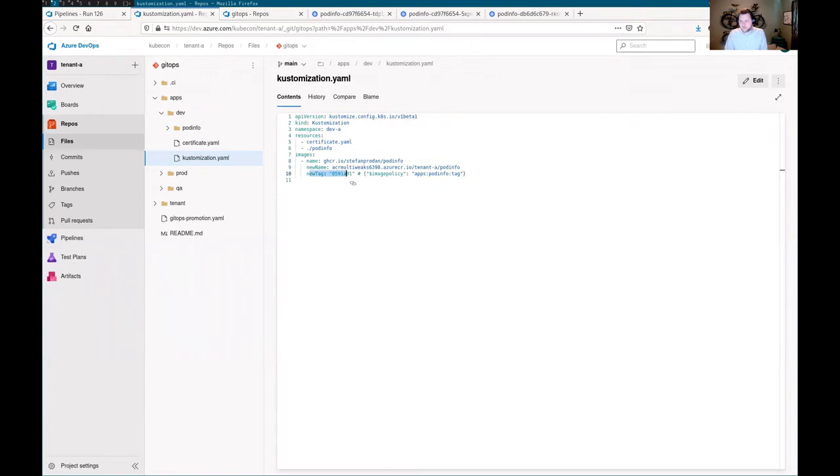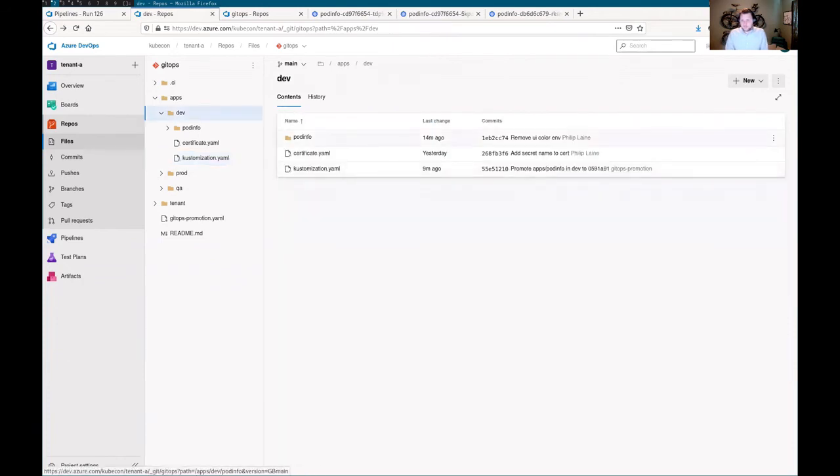This annotation is a custom annotation used by the tooling that runs in our CI to update. You can also, in theory, do these types of promotion flows with image automation controller as it becomes more stable. I think currently it's in a beta or alpha release, but probably soon it will reach a more stable version that will come by default in Flux.